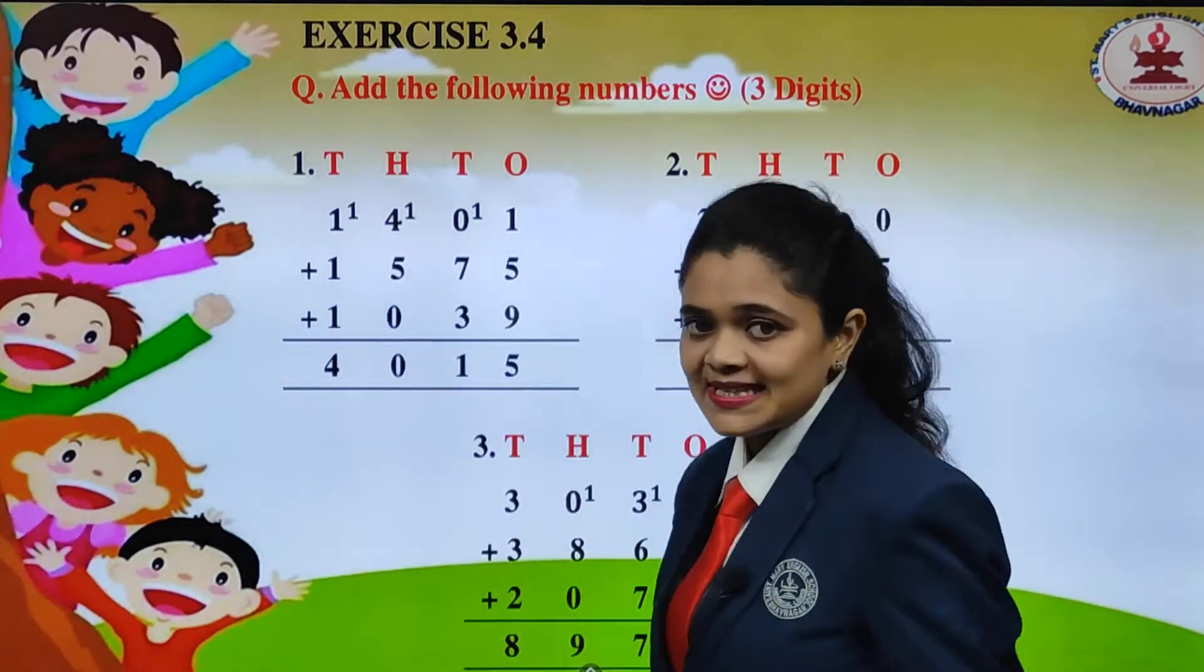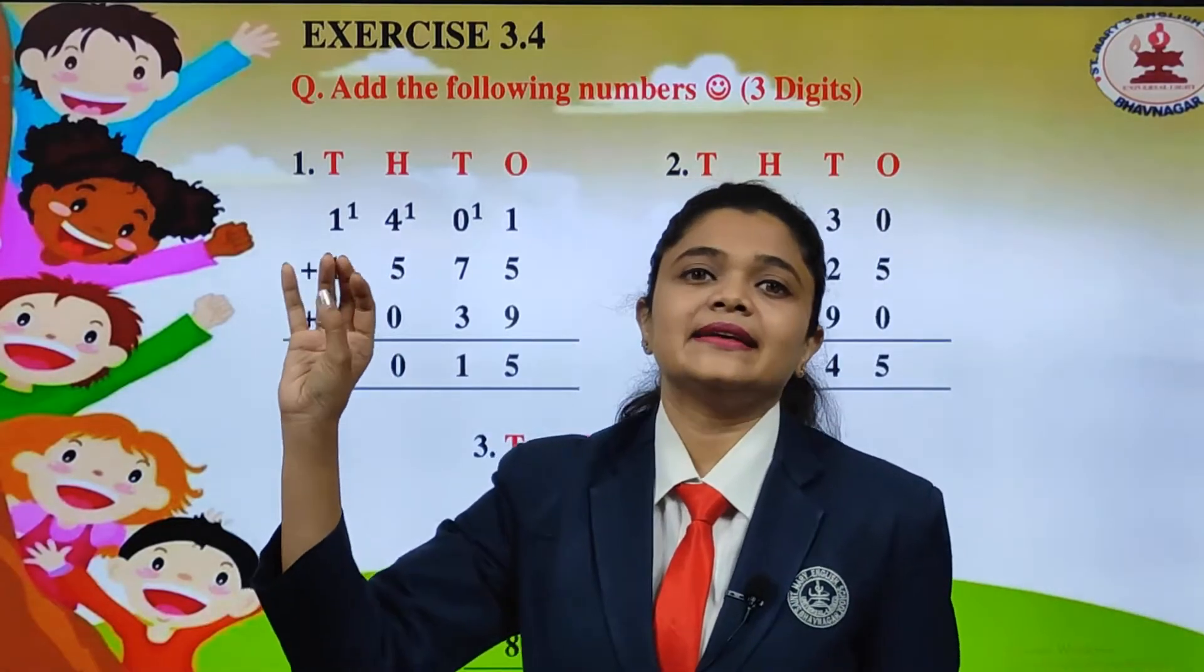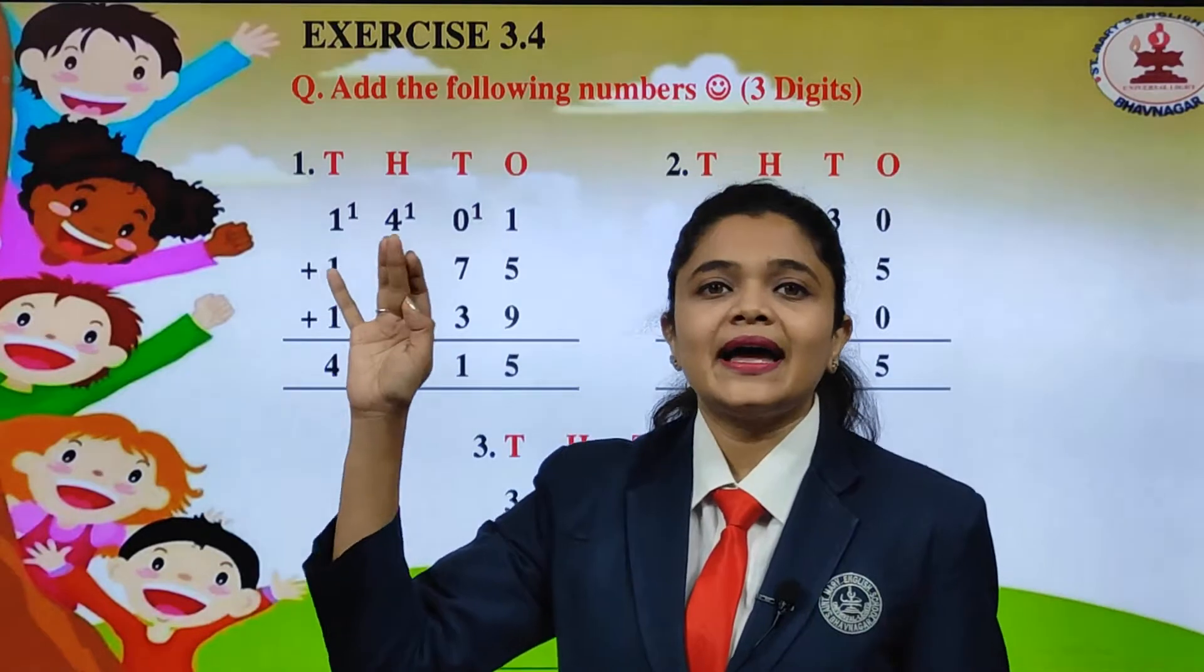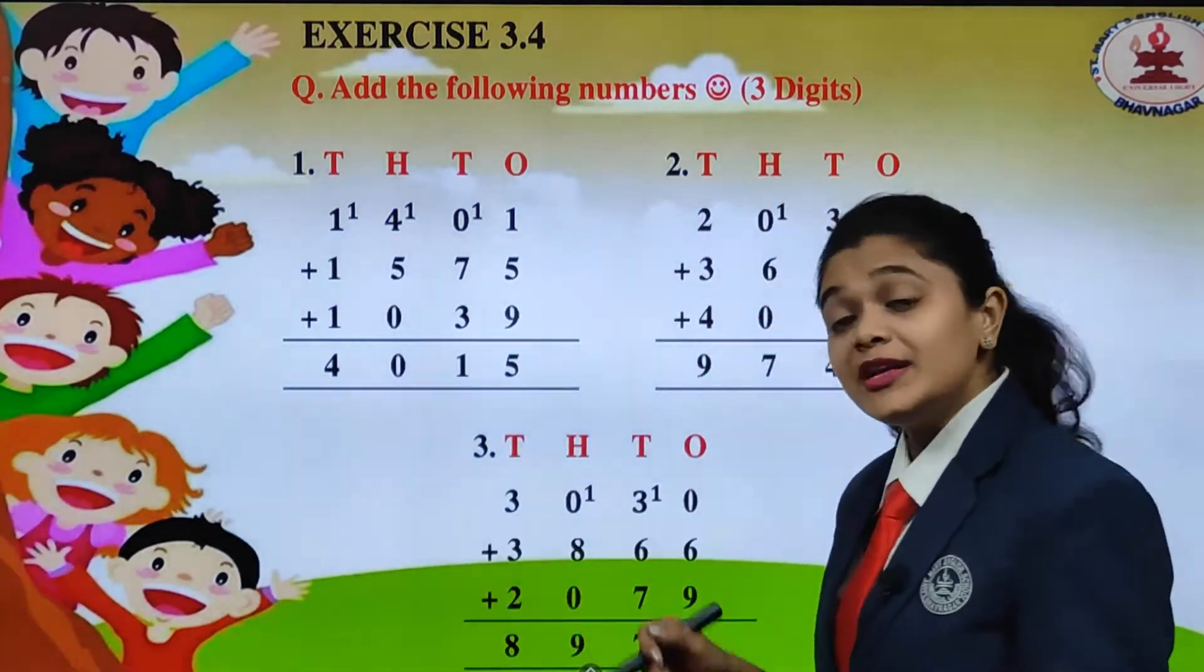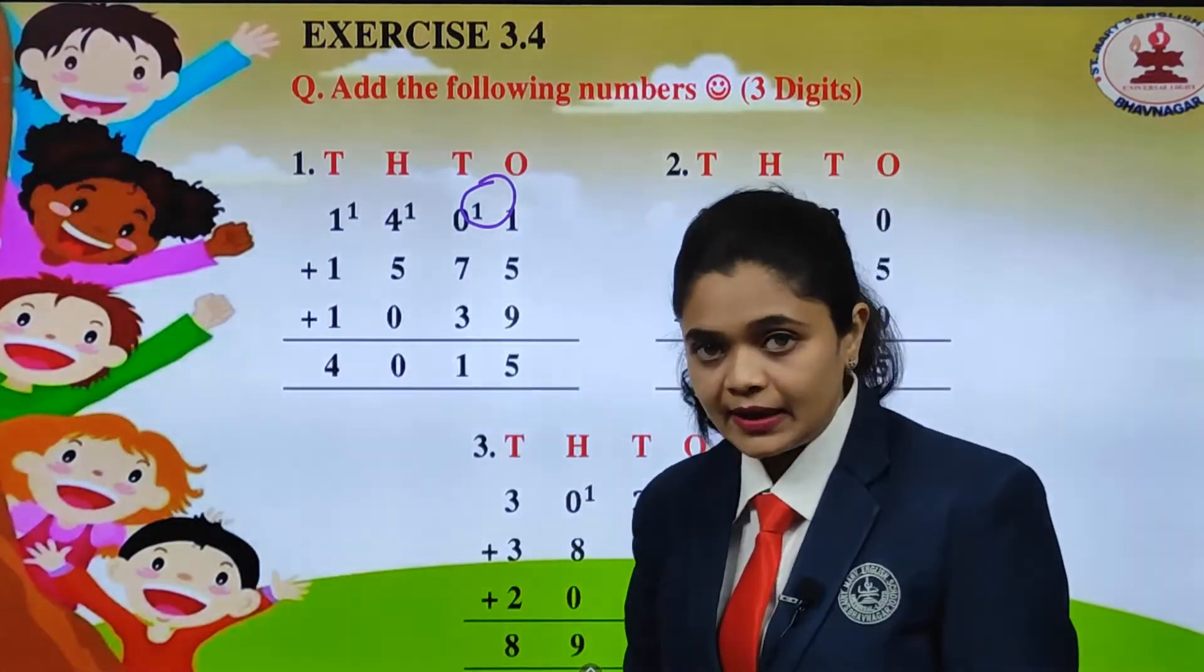1 plus 5 will get 6. Now 6 plus 9: 7, 8, 9, 10, 11, 12, 13, 14 and 15. Again two digit number. 1 we will carry, 5 we will put down.